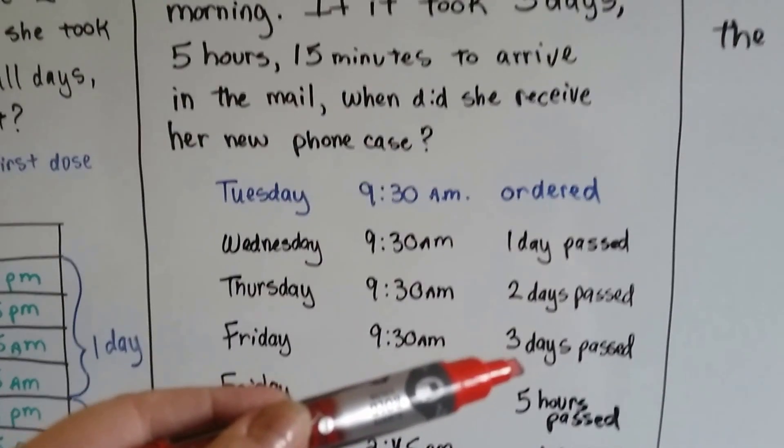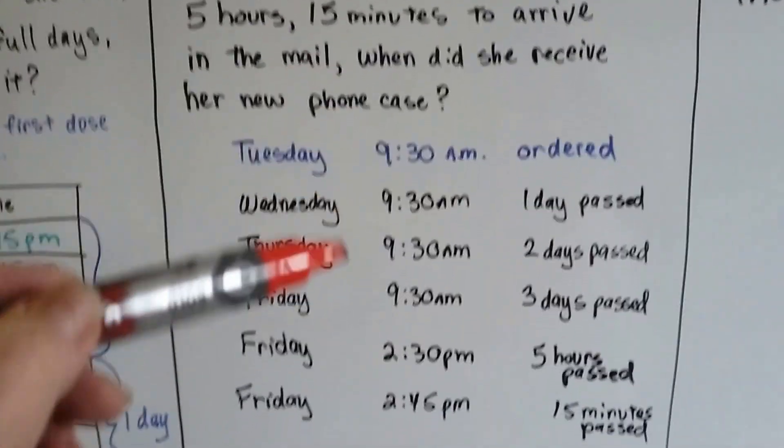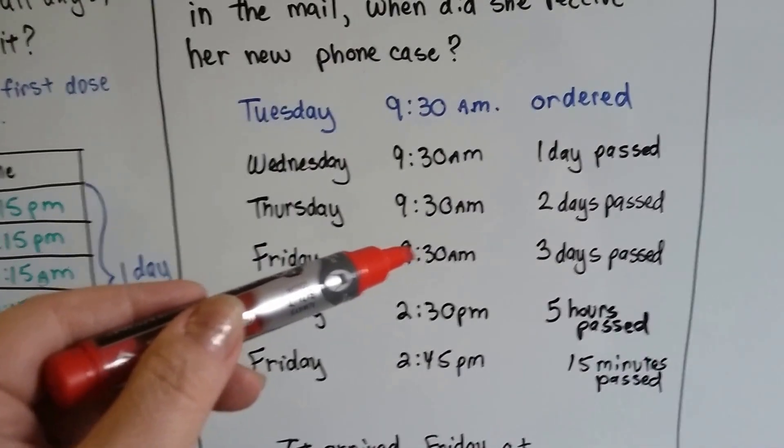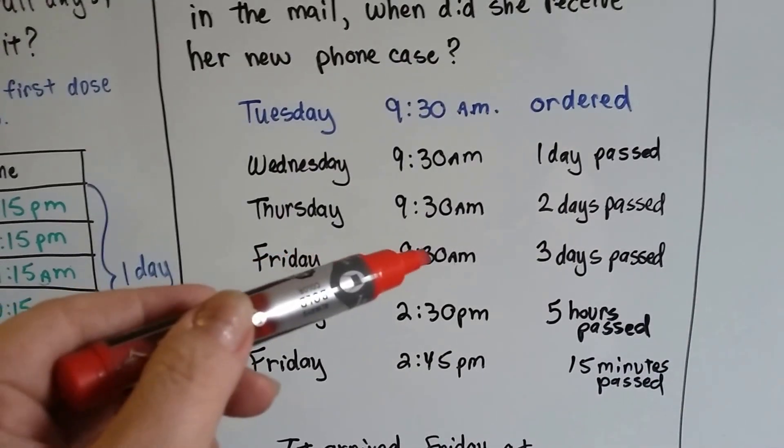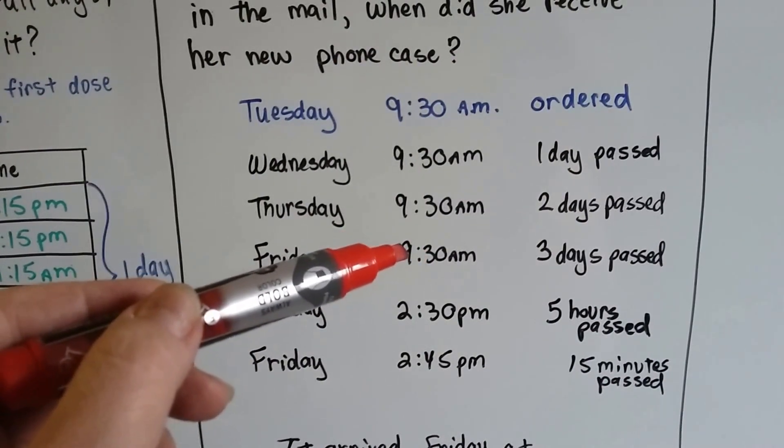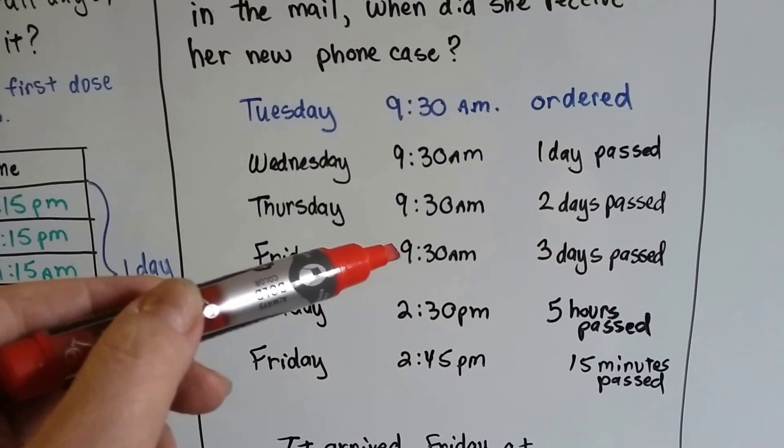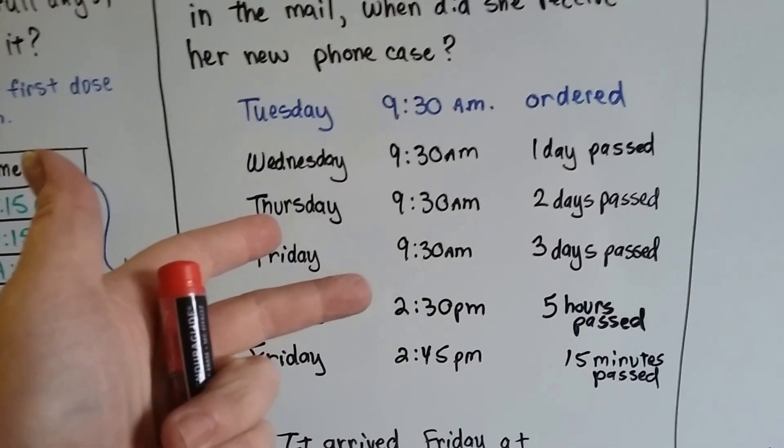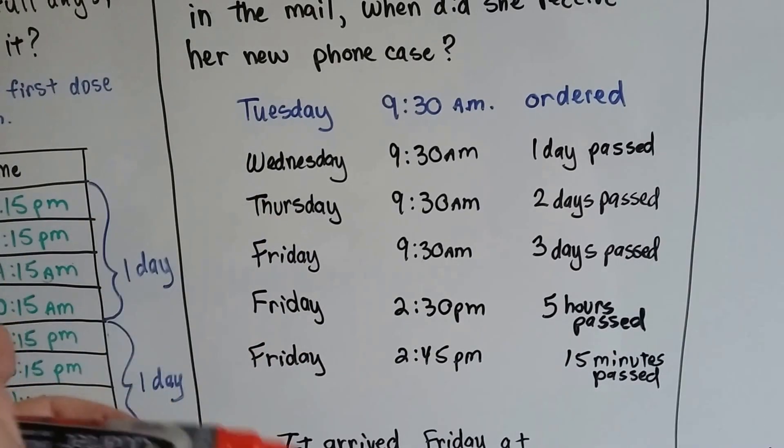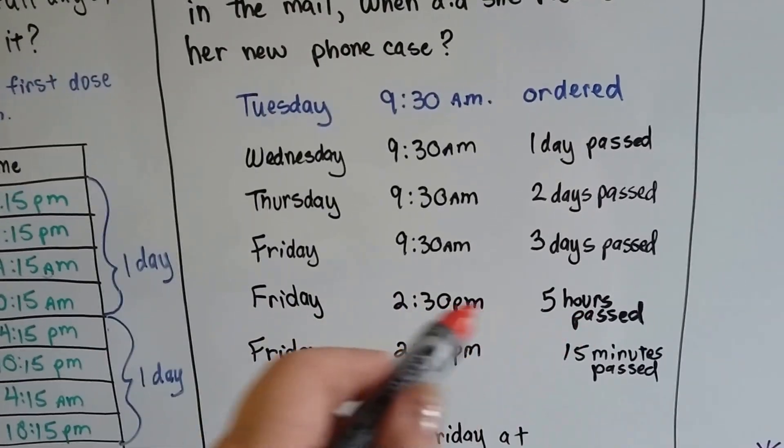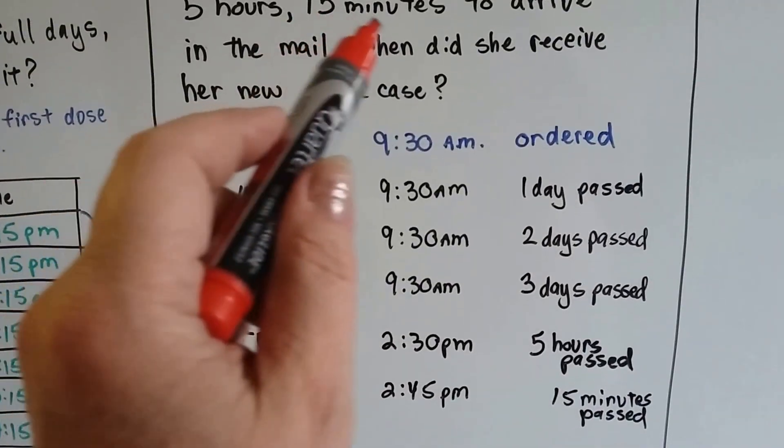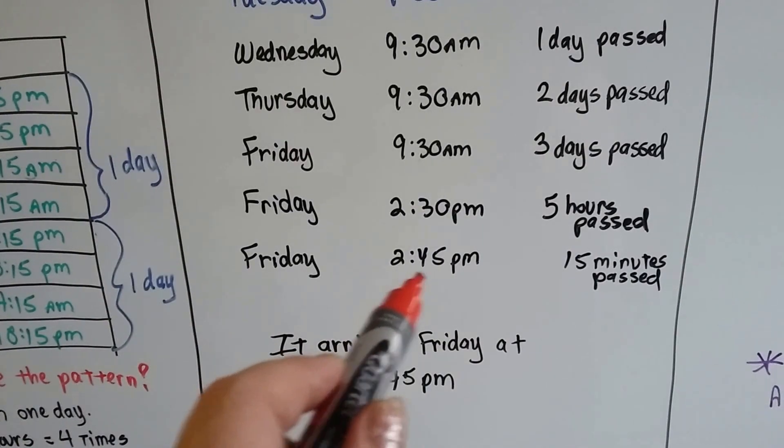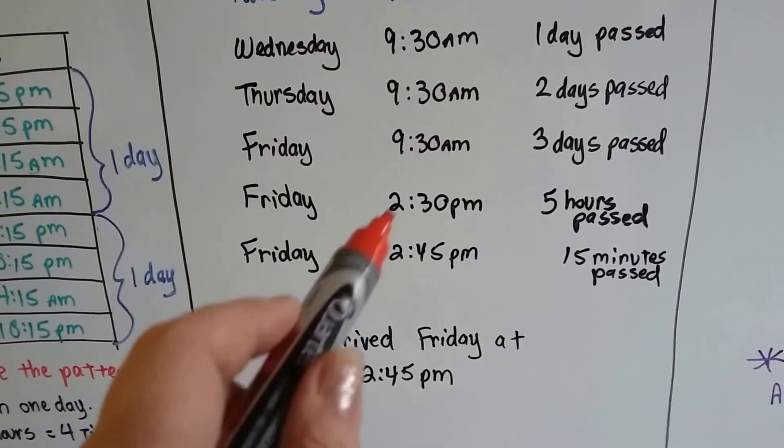Now it took three days, five hours, and 15 minutes. So now we know it arrived on Friday because it's 9:30 in the morning and five hours is not enough to take us to Saturday. We need to add five hours to the 9:30. So 9, 10, 11, 12 gets us three hours, and then after the 12 we go one, two. So we're at 2:30 on Friday. That's the five hours. And now we need to add the 15 minutes. 15 minutes from 2:30 p.m. is 2:45 p.m. See, it arrived Friday at 2:45 p.m.